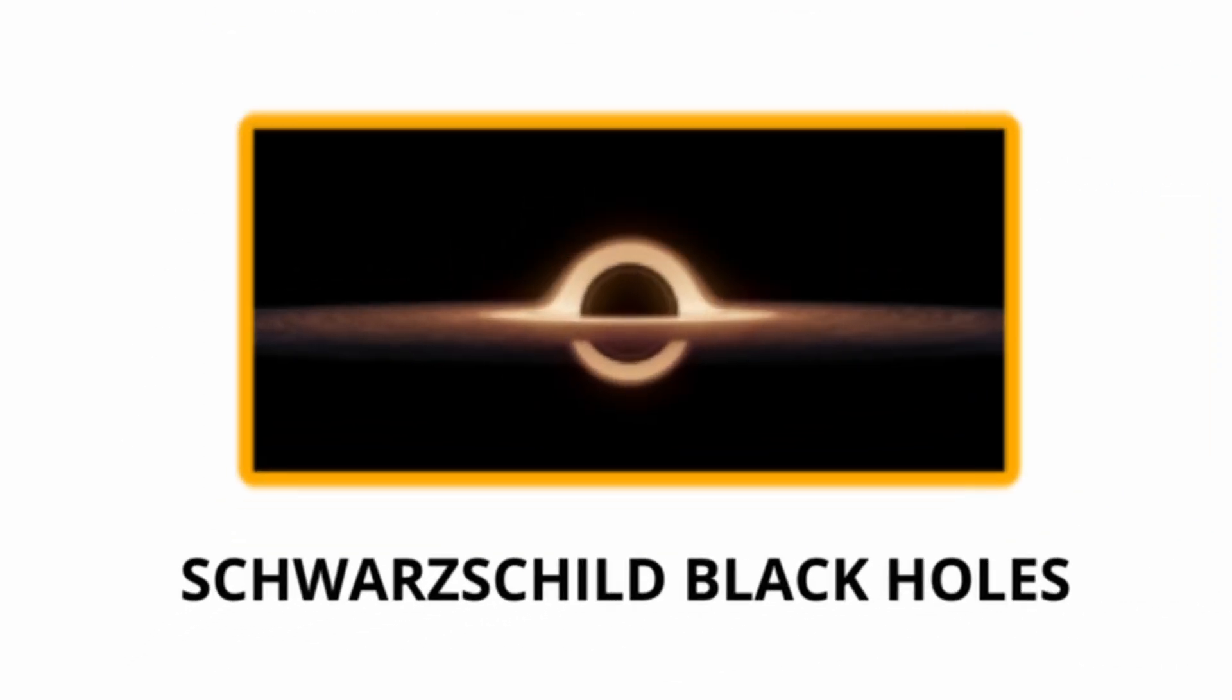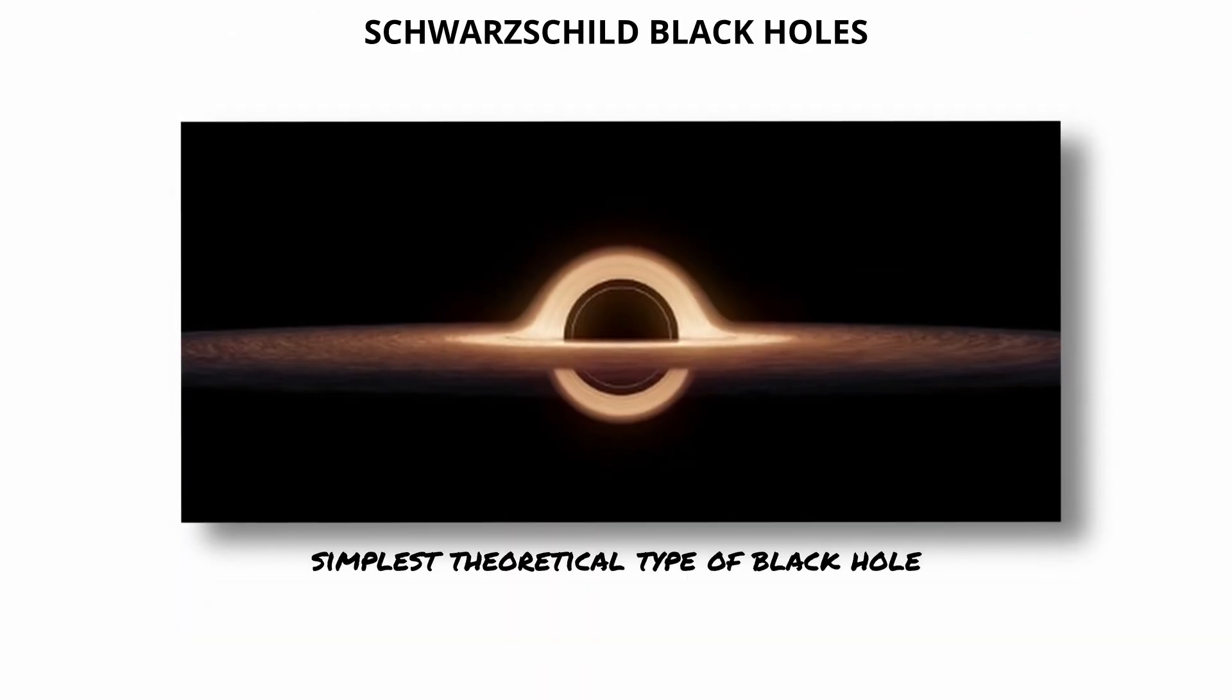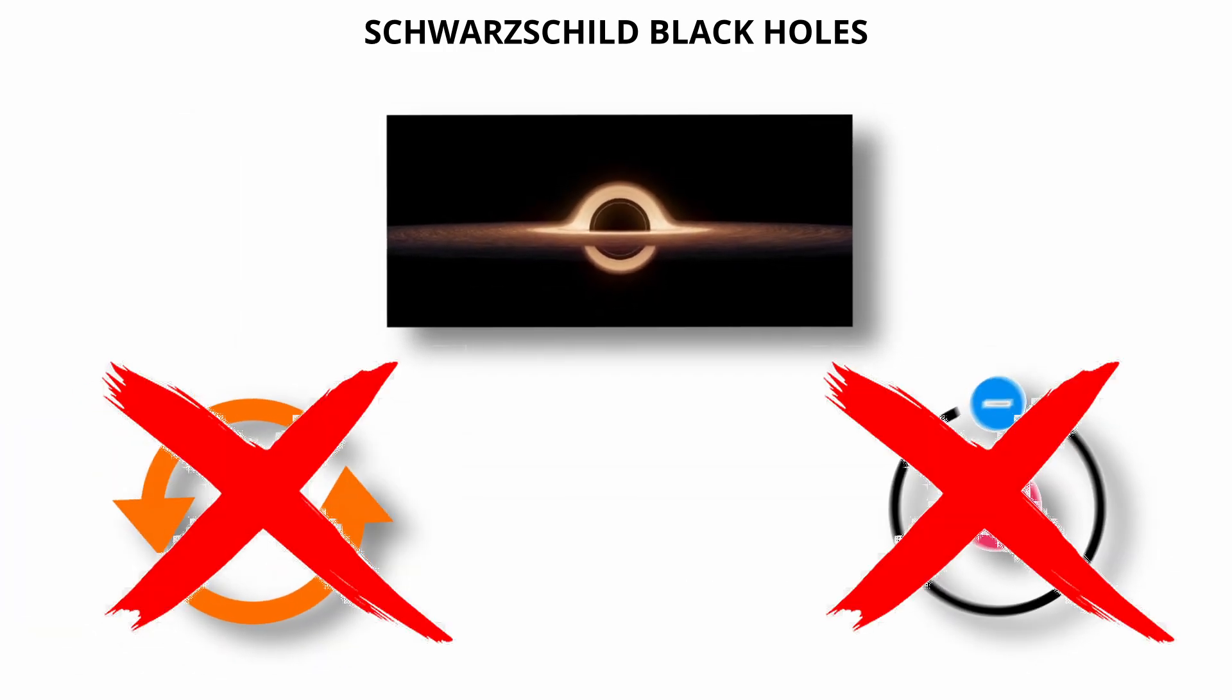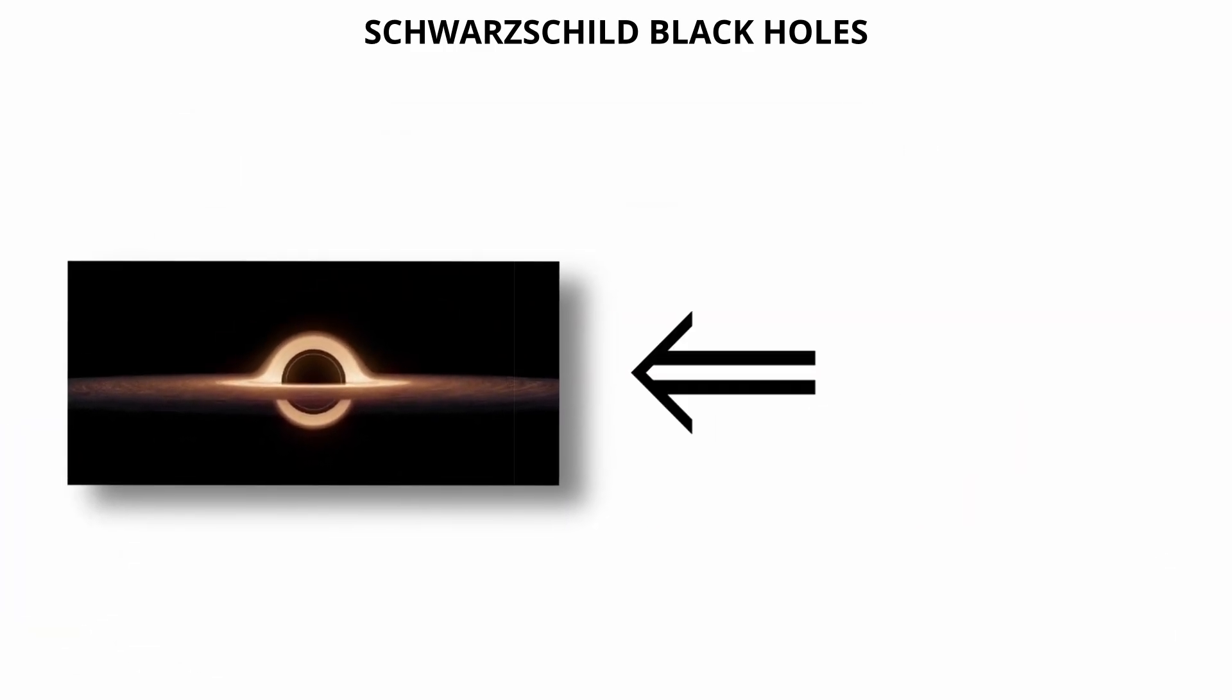Schwarzschild black holes. Schwarzschild black holes are the simplest theoretical type of black hole. They are non-rotating and uncharged, meaning they have only one defining characteristic: mass.